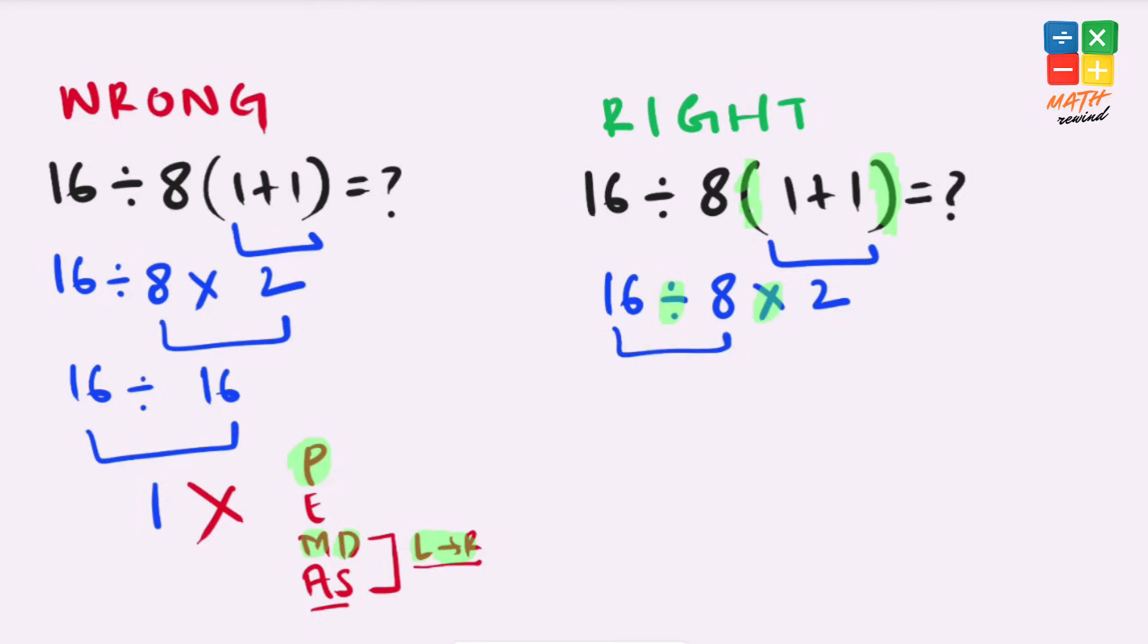So the left-hand side is the divide operator. 16 divided by 8 gives us 2, and 2 times 2 gives us 4, which is the right answer to this problem according to the order of operations, also known as PEMDAS or BODMAS.